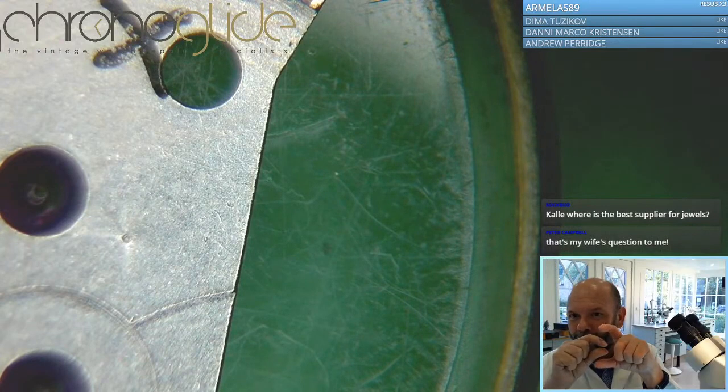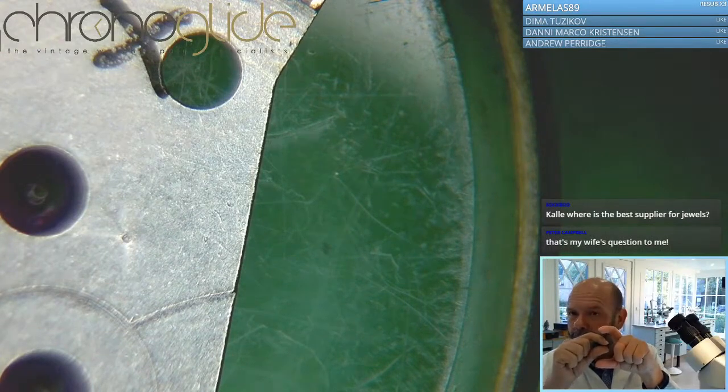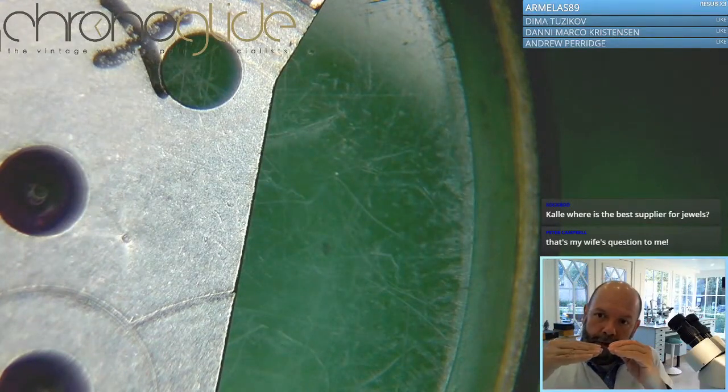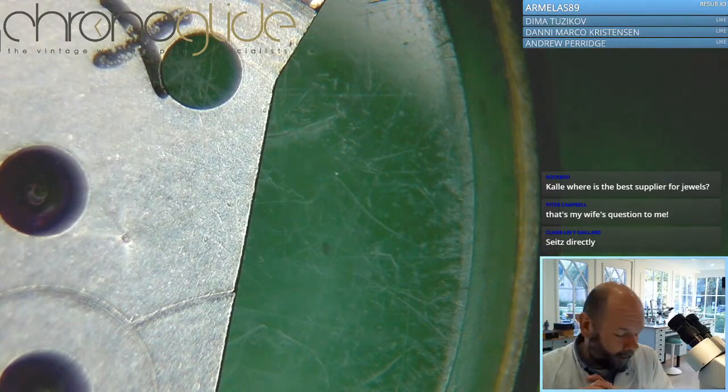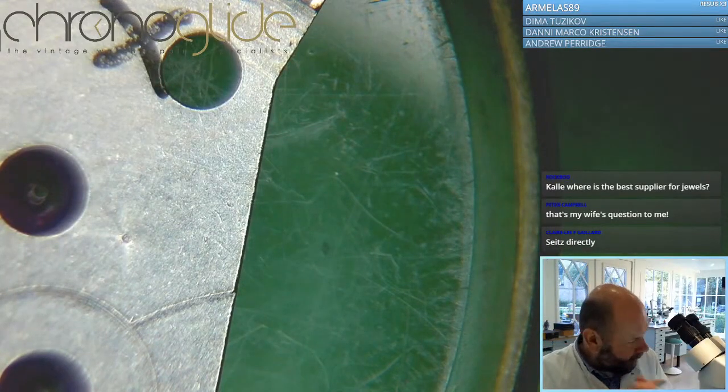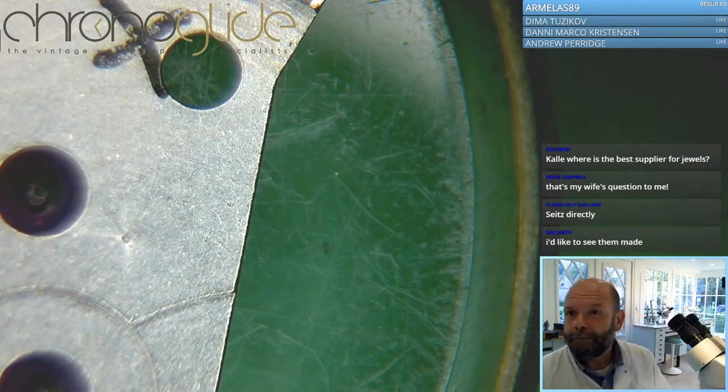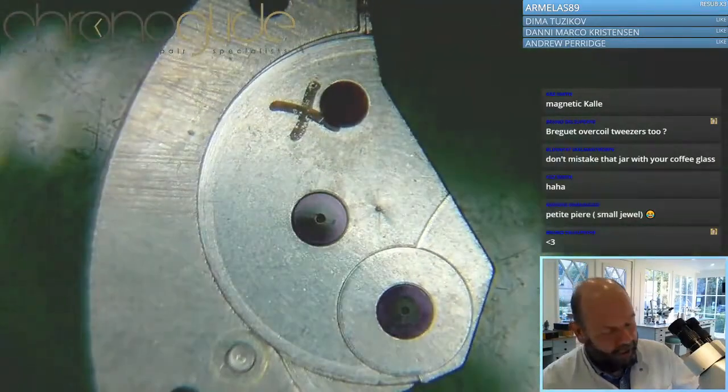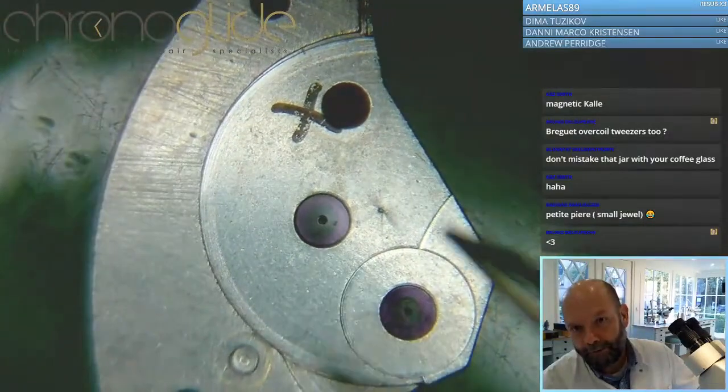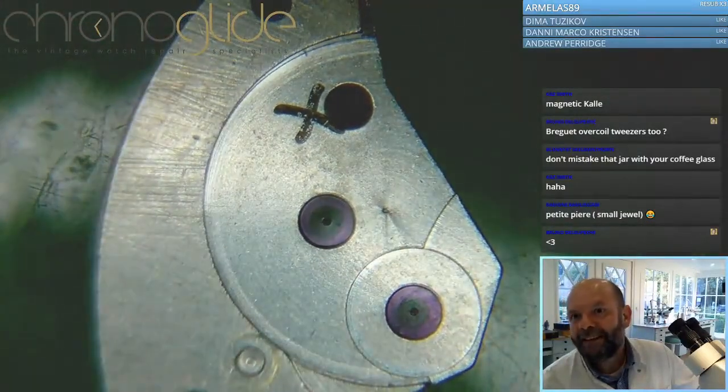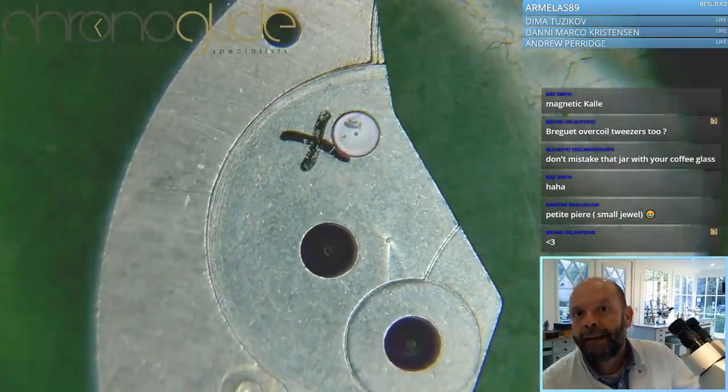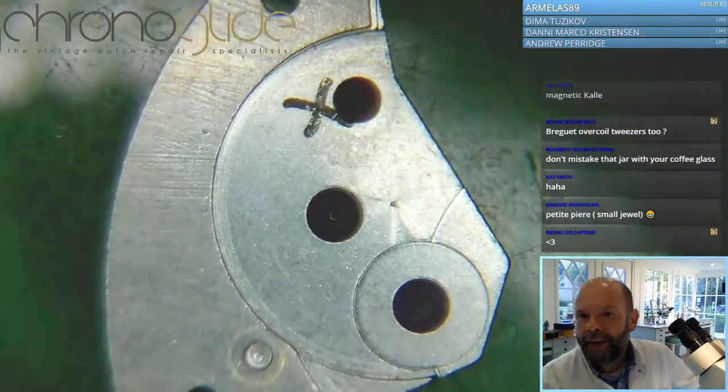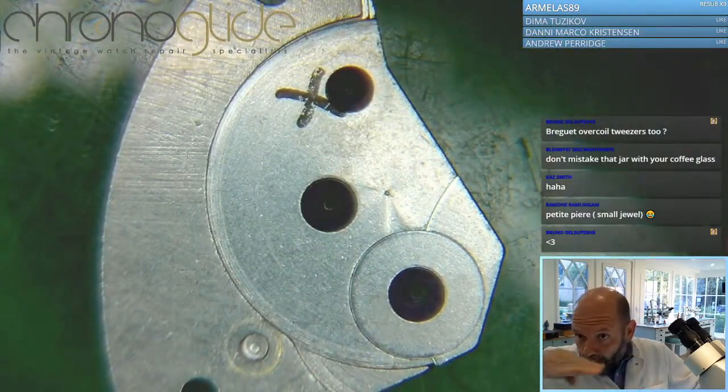With end shake, you change one jewel or the other so there's not too much play, and with division you move both to make sure the height is okay. A small tip: if I move the part, you can see these two reflect the lights at the same time. That is the perfect way to see if all jewels are in one plane.